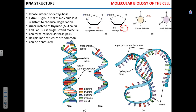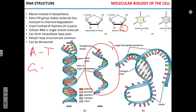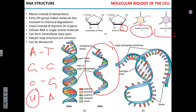So it's single-stranded, and it is still synthesized based on the complementarity principle. So A in the mRNA will pair with T, G with C, C with G. But now we have to introduce the new nitrogenous base, which is uracil. Uracil will be complementary to A. So uracil in RNA substitutes thymine.